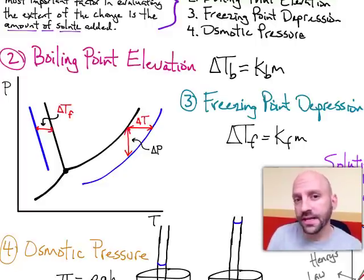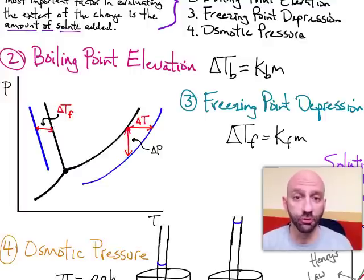We're on to our next couple of colligative properties that we're going to describe here, and the two of them are actually closely related. We're going to take a look now at the ideas of boiling point elevation and freezing point depression.